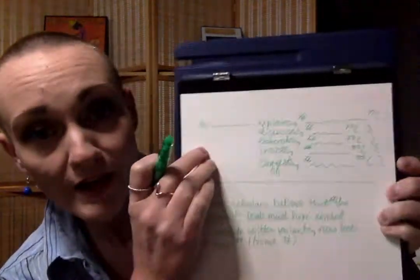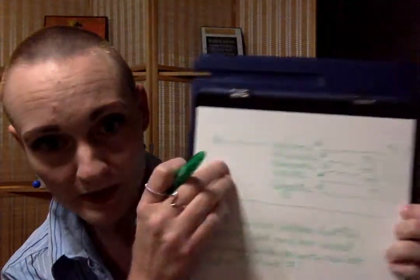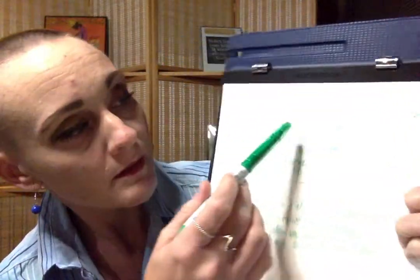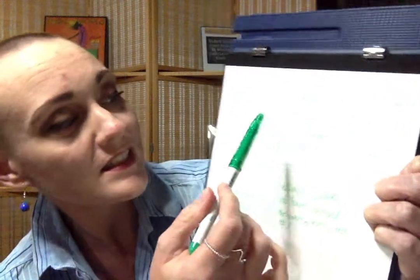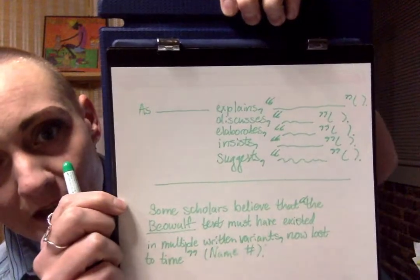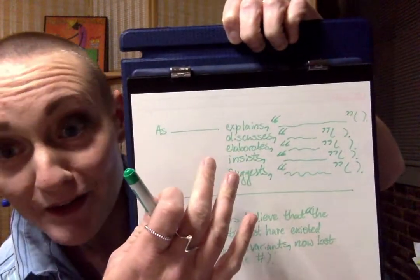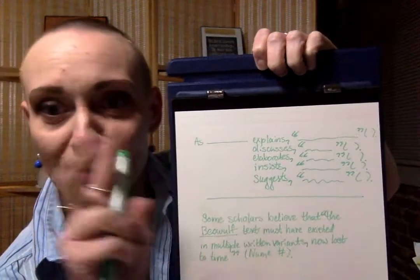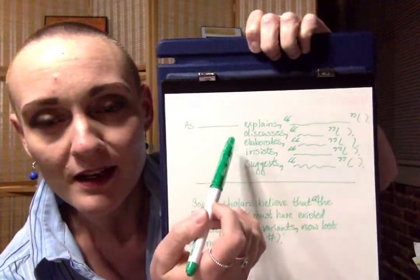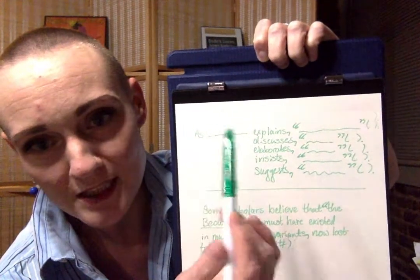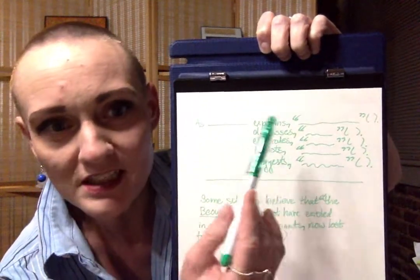But here you have 'as so-and-so,' put their name, as their name explains, discusses, elaborates, insists, suggests. Can you see that? There we go. Any of these terms, there are other ones. I was just trying to come up with a list that's a little punchier than 'it says' every single time. States, I don't really like states, honestly. It's no better than says, but insists, suggests, any of those.